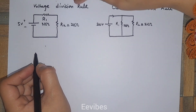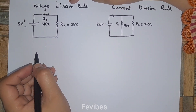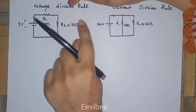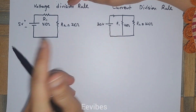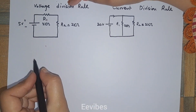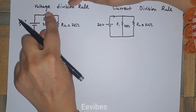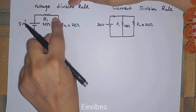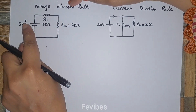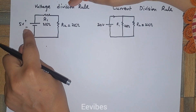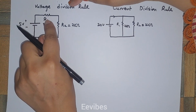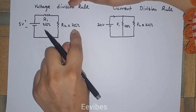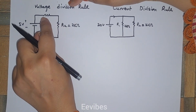Hi everyone, this is Asma Mushtaq from the Double E Wipes. Let's see how we can apply the voltage division rule and the current division rule simply. The voltage division rule says that when two resistors are connected in series with a DC source of 5 volts, the voltages will be different across each resistor.